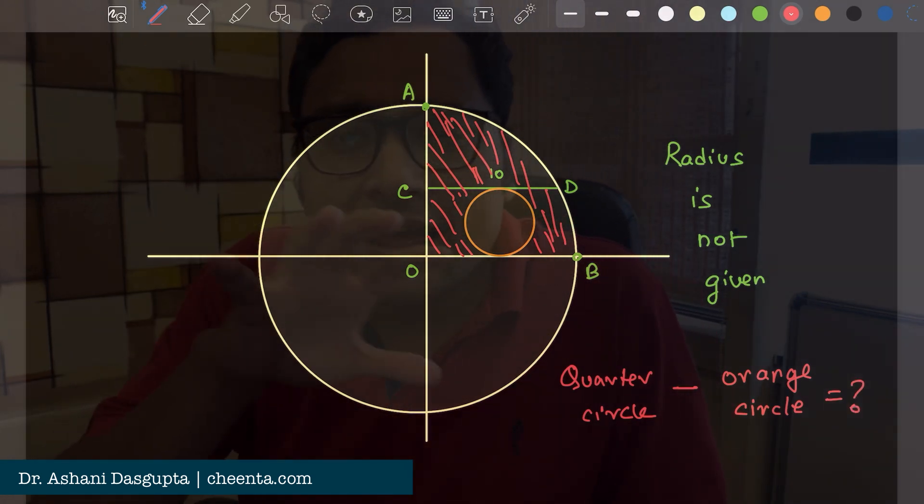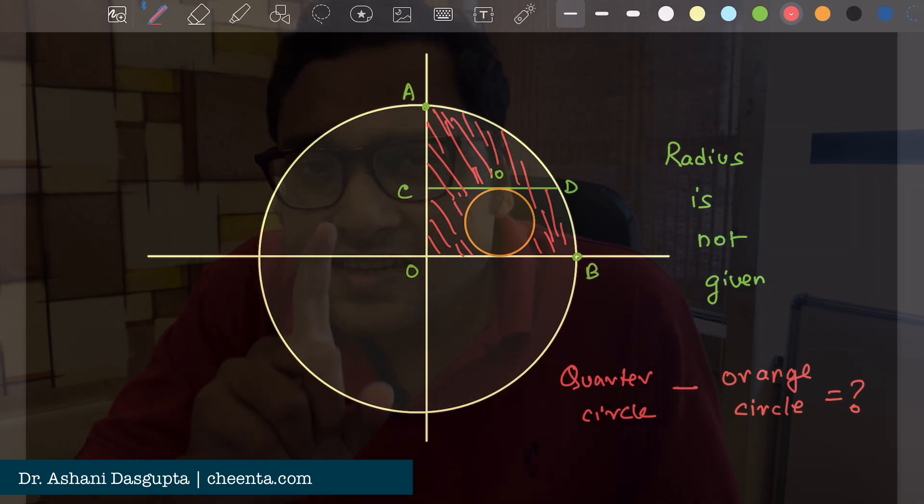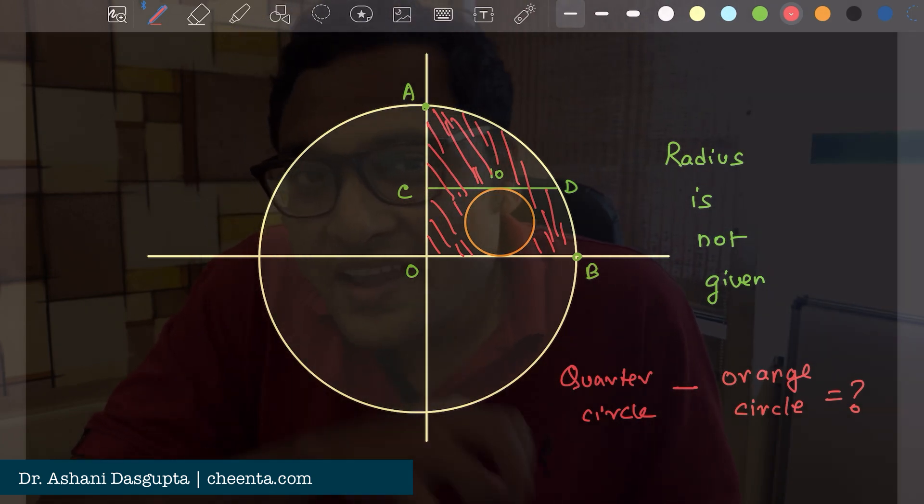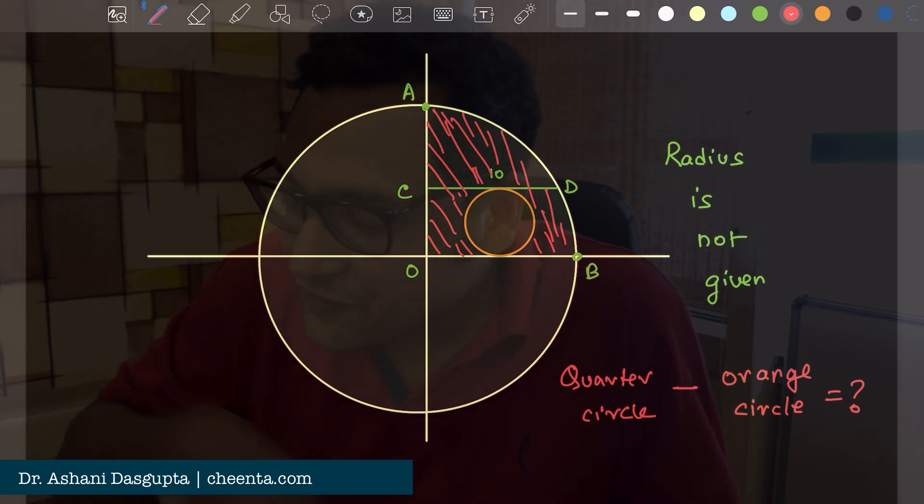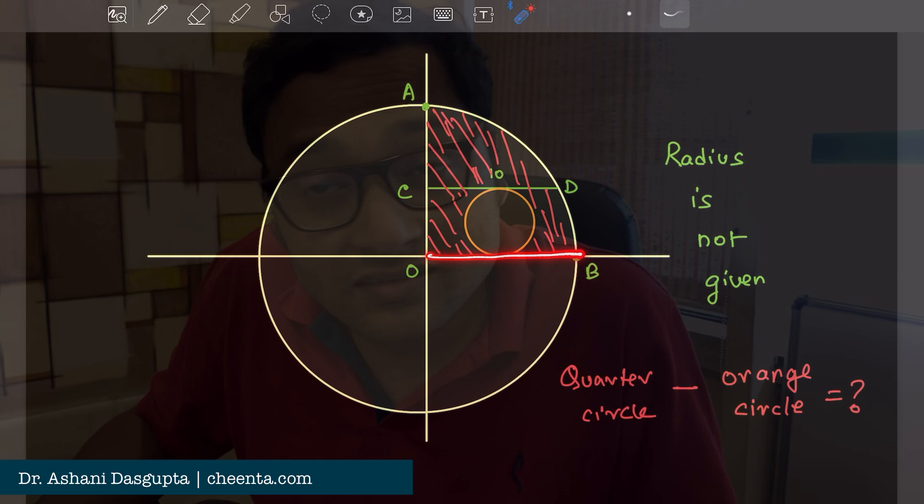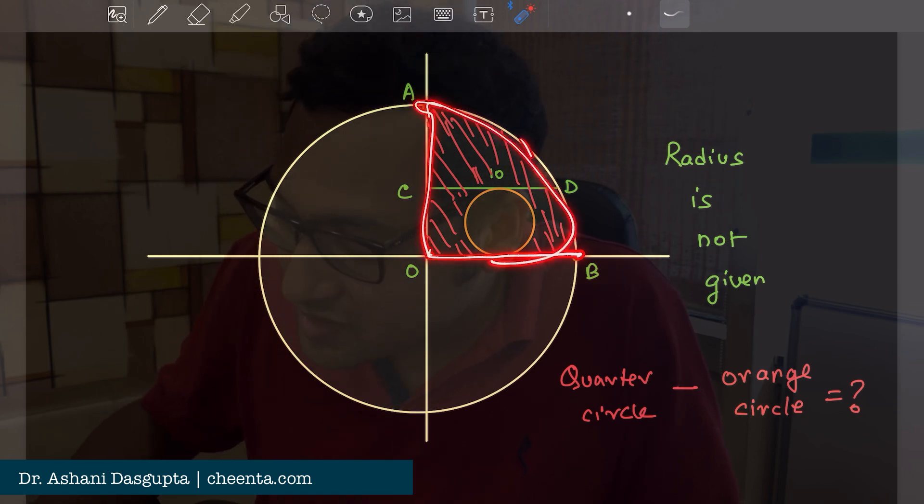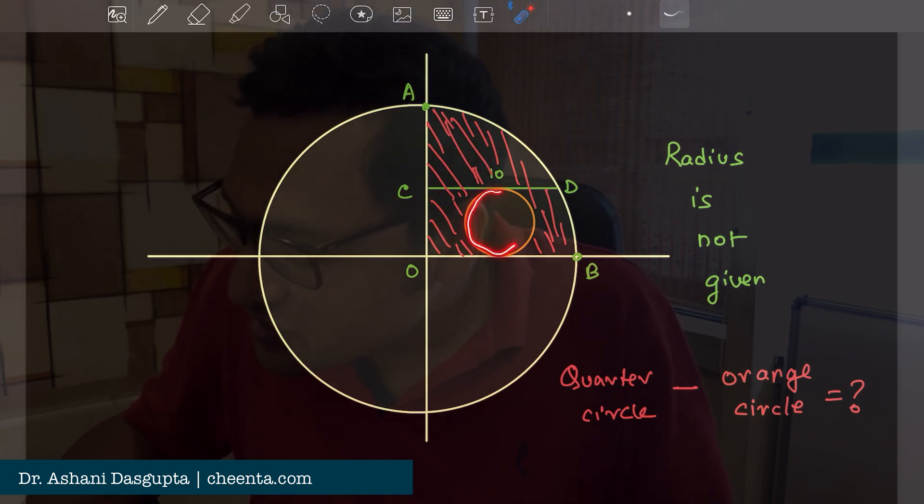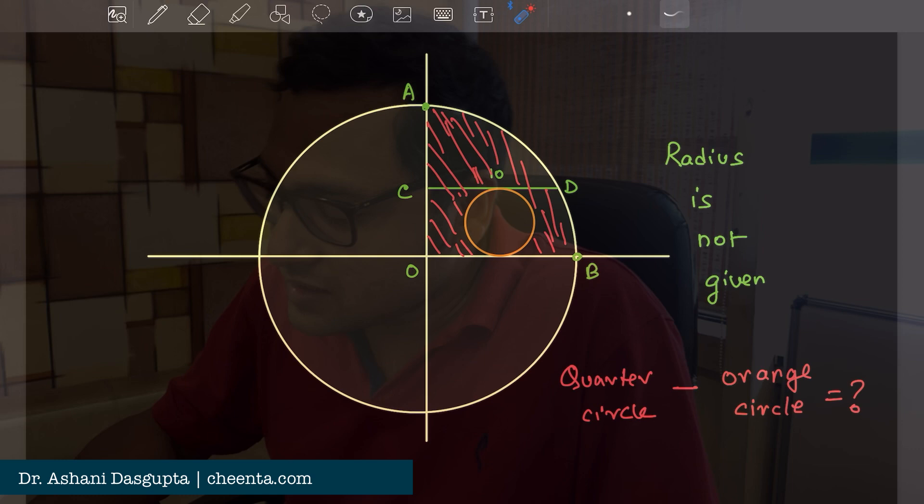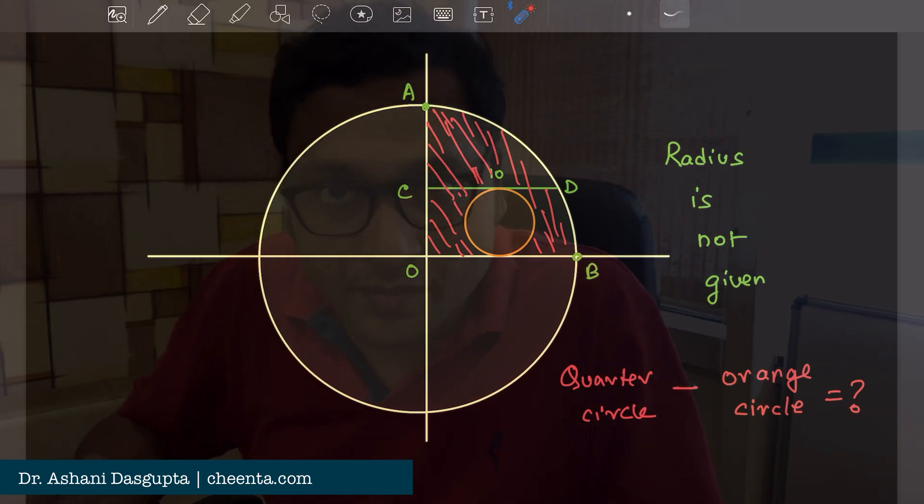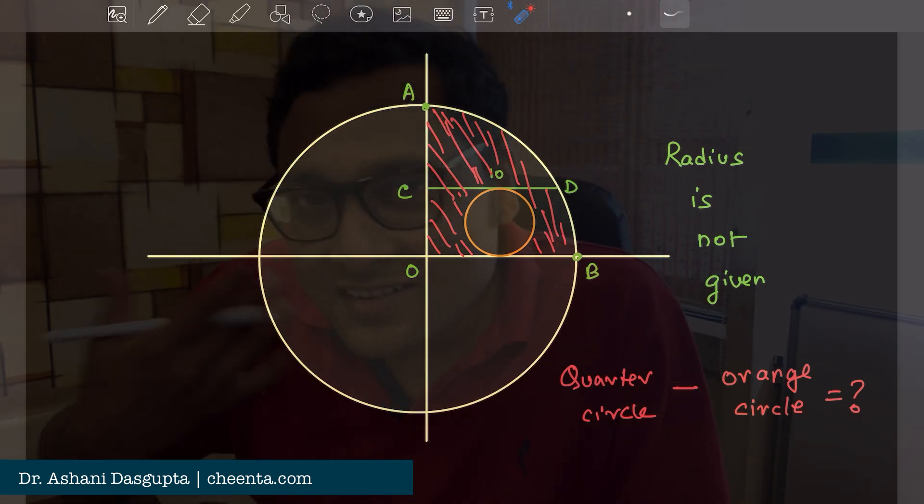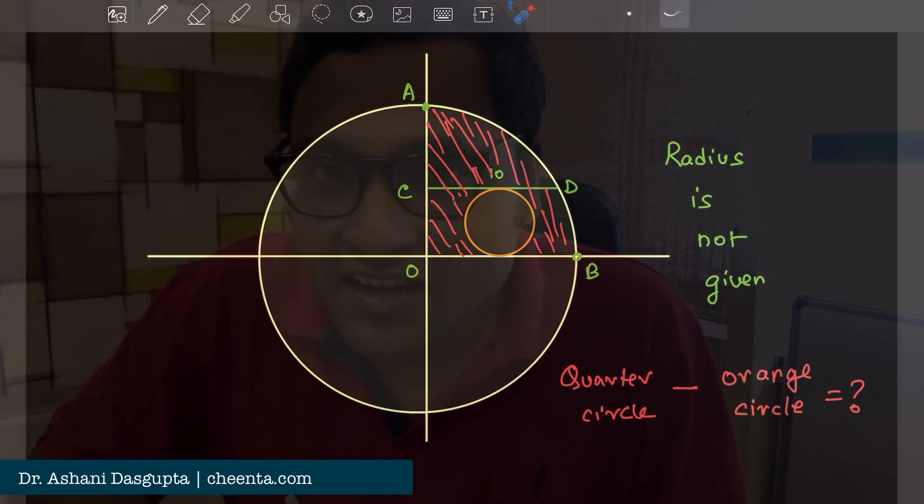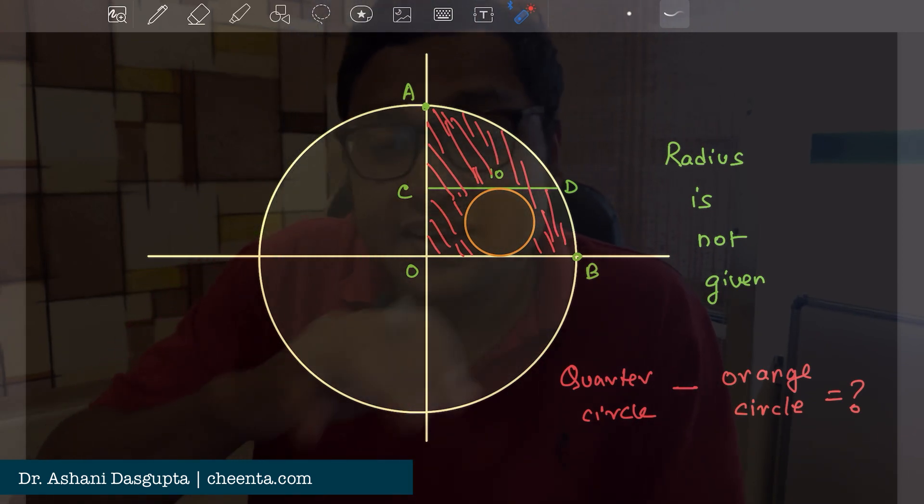At first glance, it may seem that you need to know the radius of the bigger circle. Because after all, if you know the radius of the bigger circle, you can just calculate the area of this quarter circle, and you also need the radius of the smaller circle so you can just subtract the smaller area from the bigger one. But it turns out you don't need the radius of the bigger circle. Let's see why.